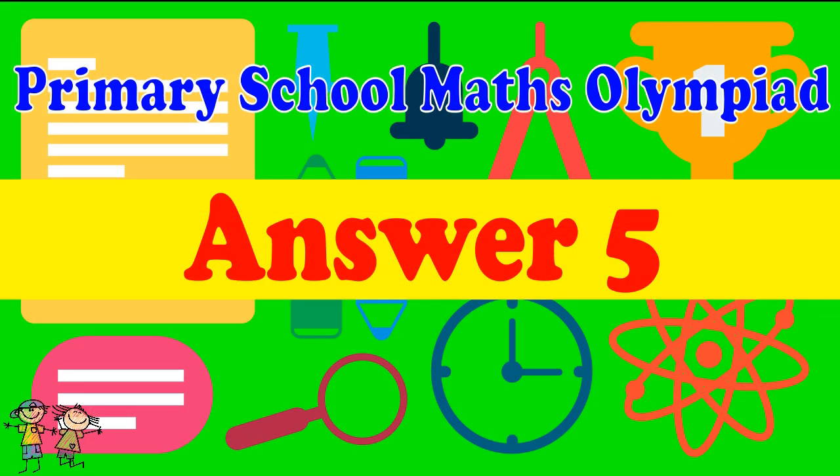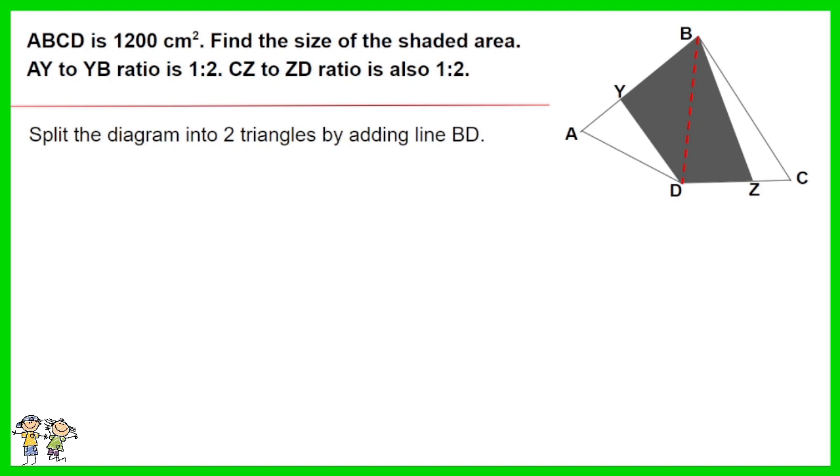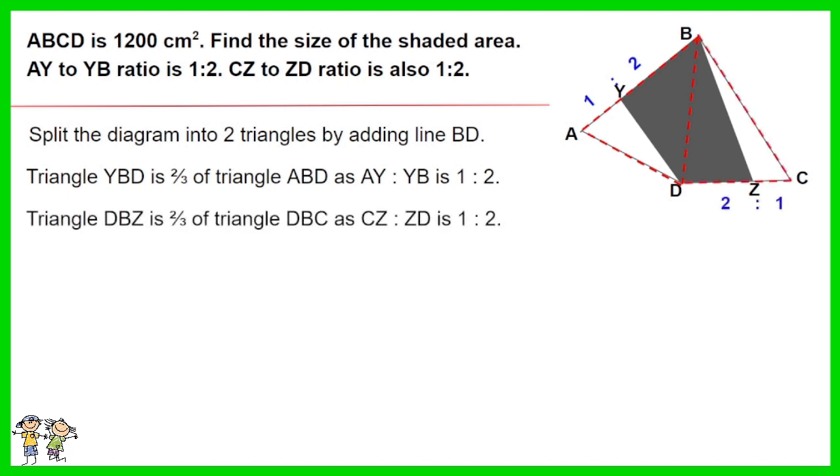Answer for question 5. Split the diagram into two triangles by adding line BD. Triangle YBD is two-thirds of triangle ABD as the AY to YB ratio is 1 to 2. Triangle DBZ is two-thirds of triangle DBC as the CZ to ZD ratio is 1 to 2. As such, the shaded area is two-thirds of ABCD, which is 2/3 times 1200. The result is 800 cm².